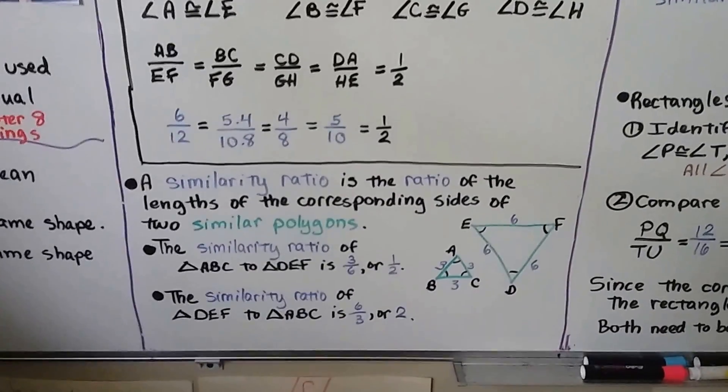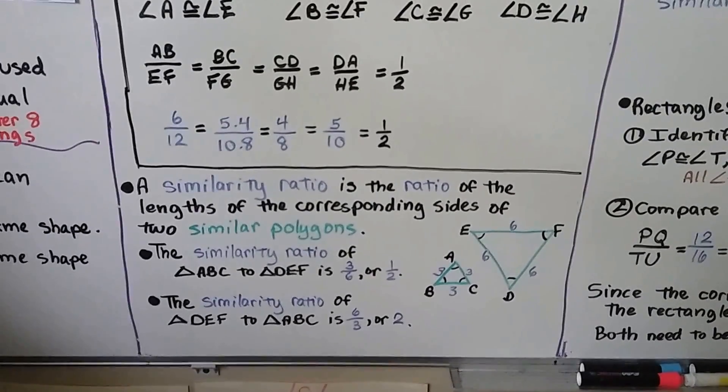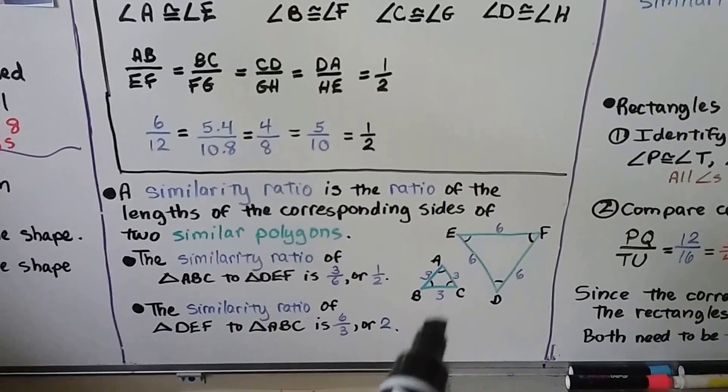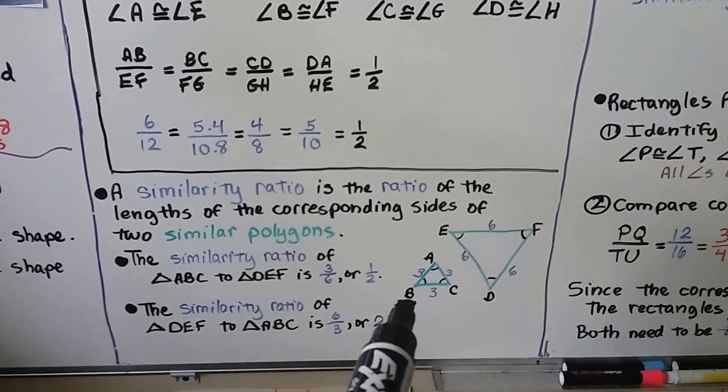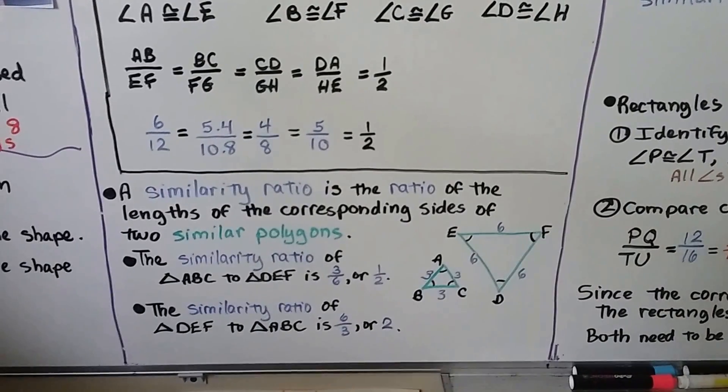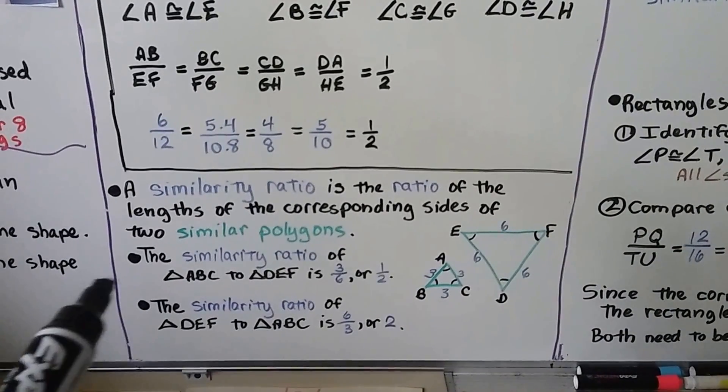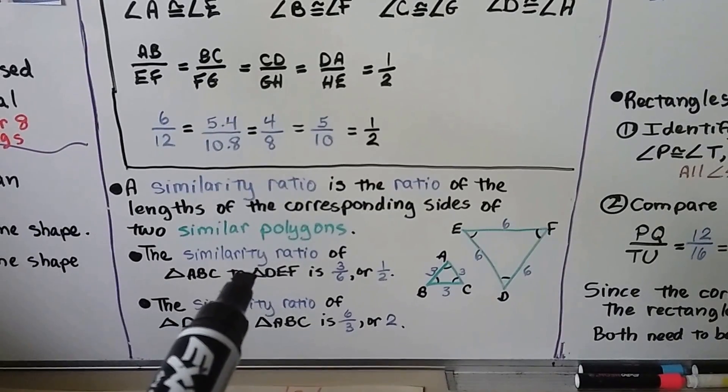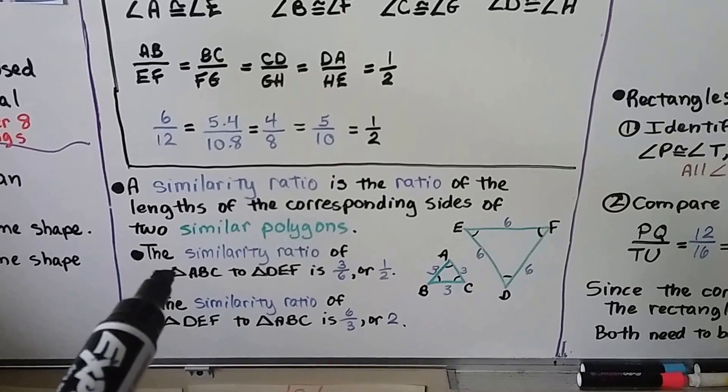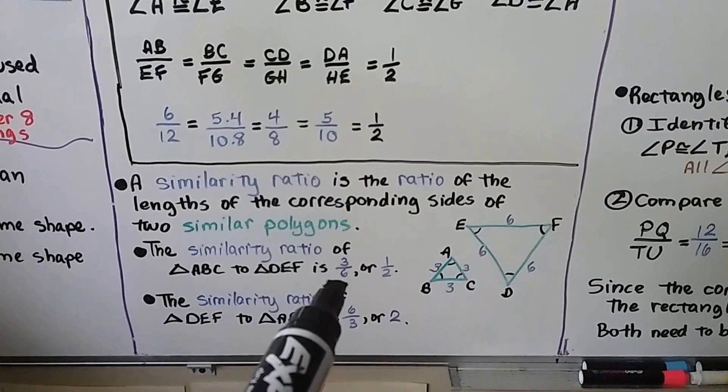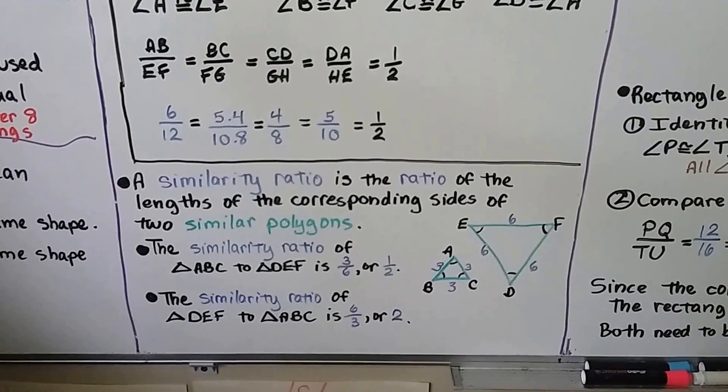A similarity ratio is the ratio of the lengths of the corresponding sides of two similar polygons. This little one is equilateral - all the sides are 3, and this one's equilateral with all sides 6. The similarity ratio of triangle ABC to triangle DEF, because we said triangle ABC first, we put that as the numerator. It's 3 sixths or simplified to one half.